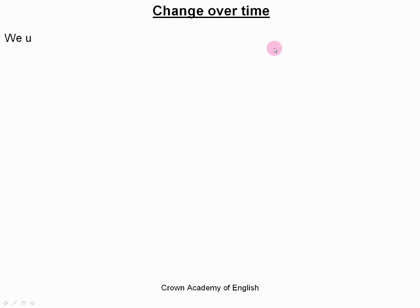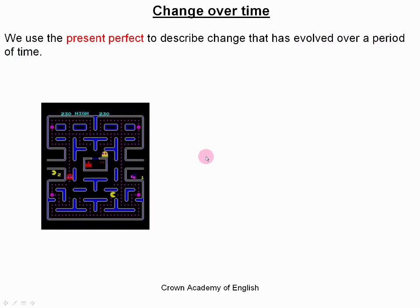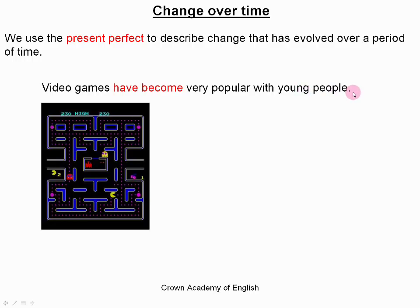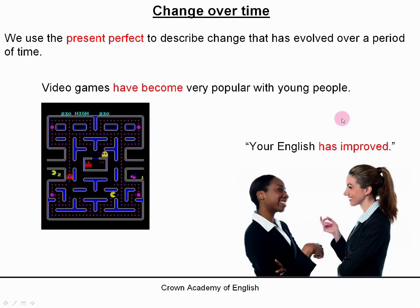Change over time. We use the present perfect to describe change that has evolved over a period of time. 'Video games have become very popular with young people.' 'Your English has improved.' So here we are using the present perfect to describe a progressive change. Perhaps last year your English wasn't very good, and now it is good — so we say it has improved. We use the present perfect for this.